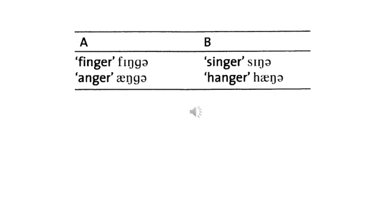Column A contains words like finger and anger, while column B contains words like singer and hanger. The distinction between A and B lies in their morphology. Words in column B can be divided into two morphemes, such as sing plus er and hang plus er. In contrast, words in column A consist of just one morpheme each. This indicates a morphological difference between the two columns.